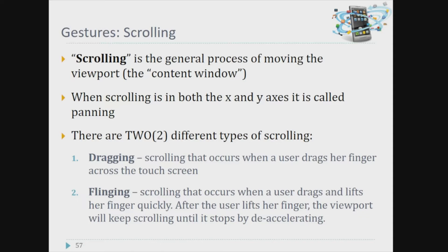There are two different types of scrolling: dragging and flinging. For dragging scrolling, the user drags a finger across the touch screen. Flinging scrolling occurs when the user drags and lifts the finger quickly. After the user lifts the finger, the viewport keeps scrolling until it is stopped by deceleration.